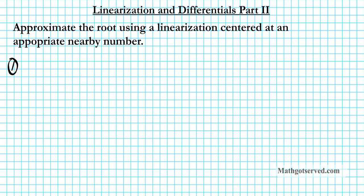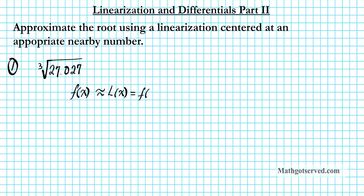We are going to be considering the cube root of 27.027. So first of all let's write down the formula for linearization of a function. A function f of x can be approximated using the linearization L of x equals f of a plus f prime of a times x minus a. This is the equation of the tangent line at x equals a.